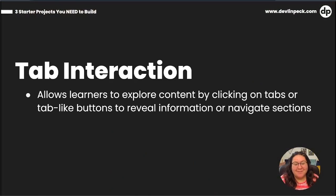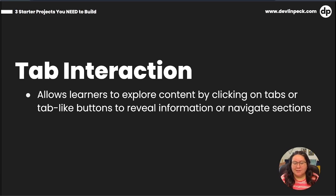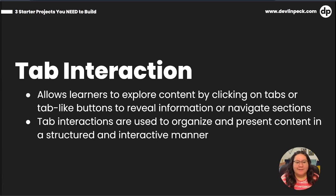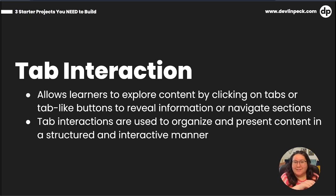First up, we have tab interactions. Tab interactions allow the learner to explore the content by clicking on tabs or tab-like buttons to reveal hidden information or to navigate between sections. Tab interactions are used to organize and present content in a structured and interactive manner. The tabs give us the interactivity where we select different content, and then the structure comes because it's broken up into smaller sections.